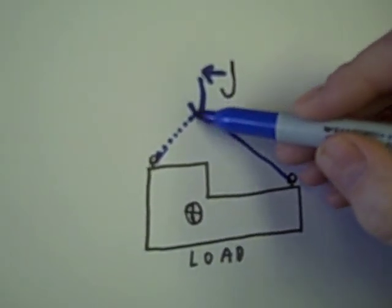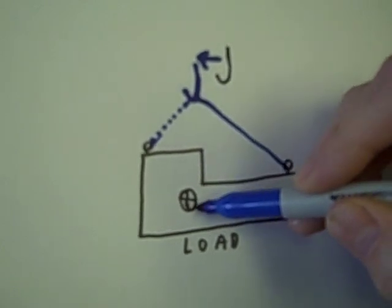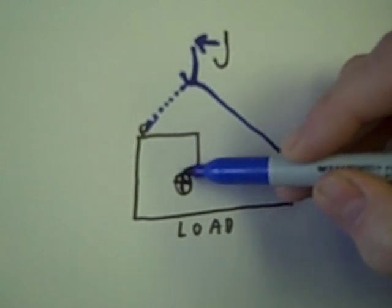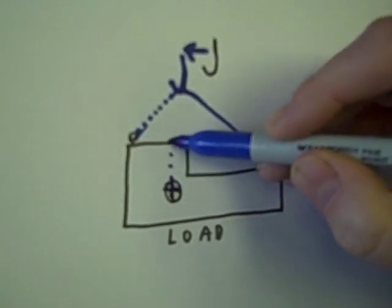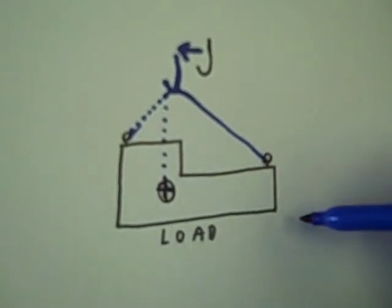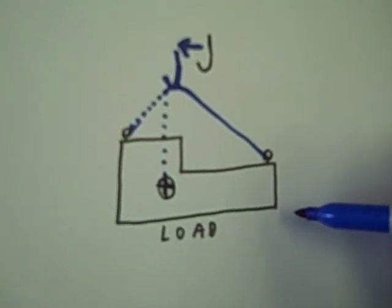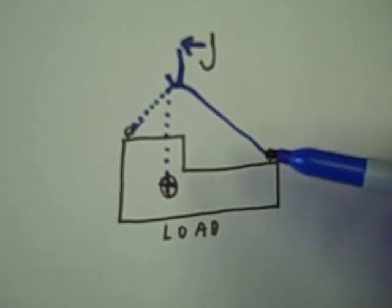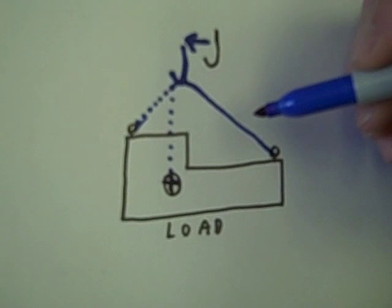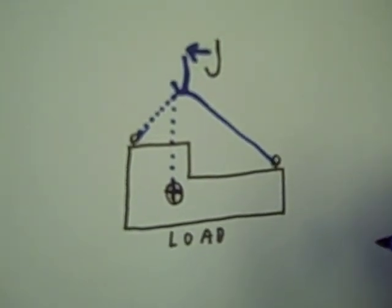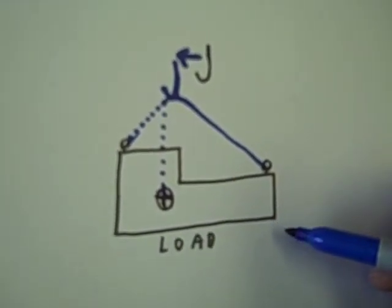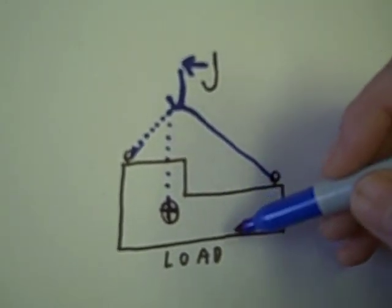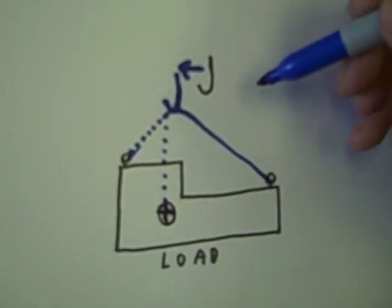When the hook point is directly above the center of gravity or the balancing point, the load will lift evenly. One end may raise just slightly before the other but it will be a level lift and a safe lift because we can set the load down in the same manner we picked it up.